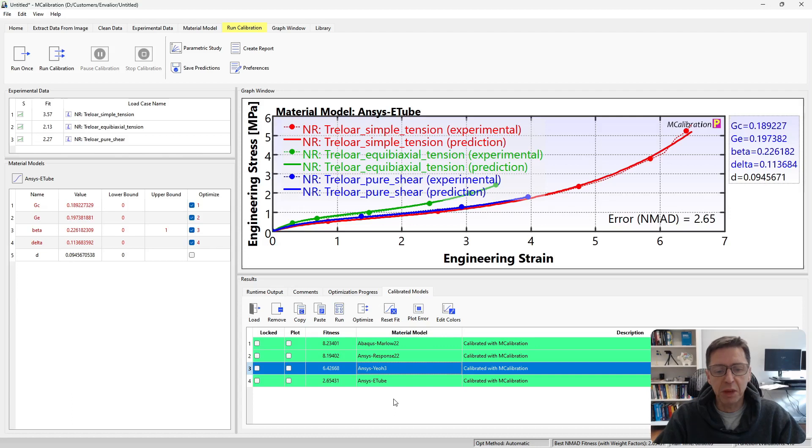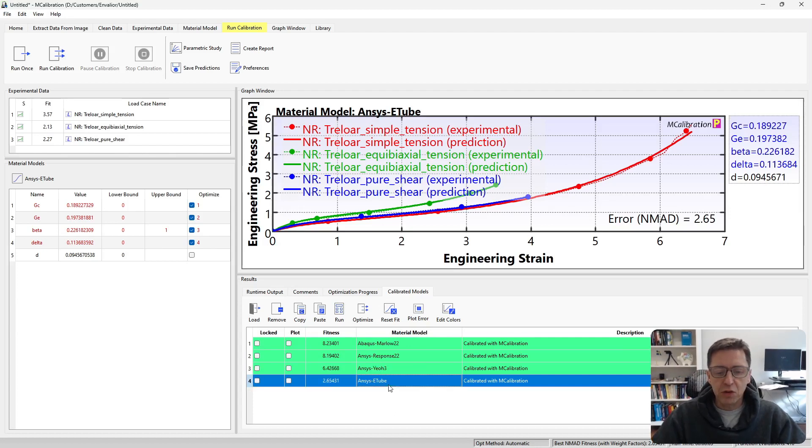Particularly the Yeoh model I find useful. It's easy to calibrate. And it also can be calibrated to uniaxial tension or uniaxial compression data only. The extended tube model that's available in ANSYS is often more accurate, but it does require more experimental data. So you have to decide if it's worth the time and money to generate that data so you can use the extended tube model. So that's it. Let me know if you have any questions.